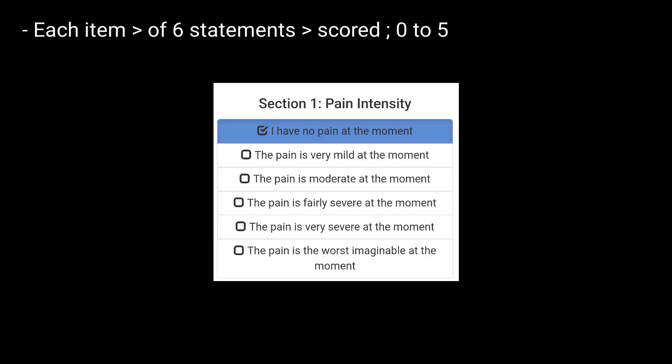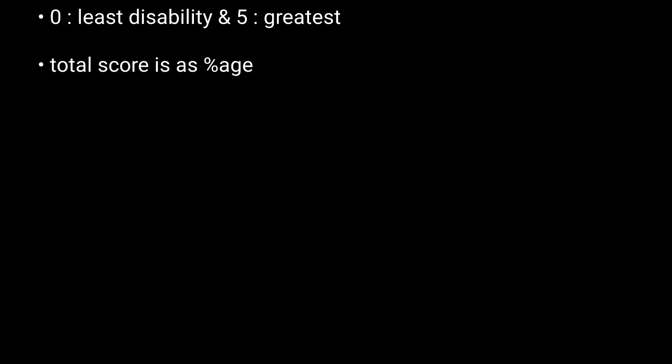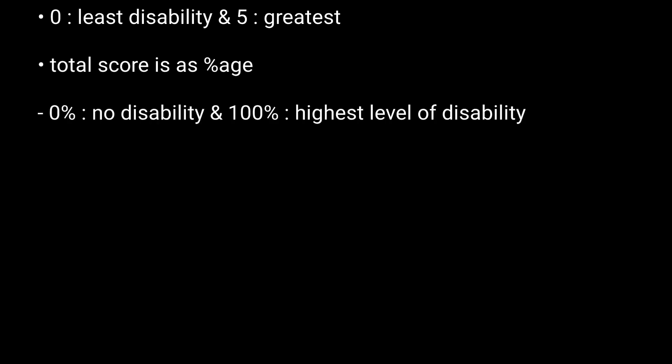As you can see in the example shown, the question is regarding pain intensity. 0 indicates the least disability and 5 the greatest. And once this is done, the total score is calculated as a percentage, with 0% indicating no disability and 100% indicating the highest level of disability.